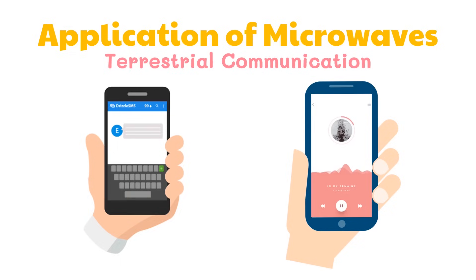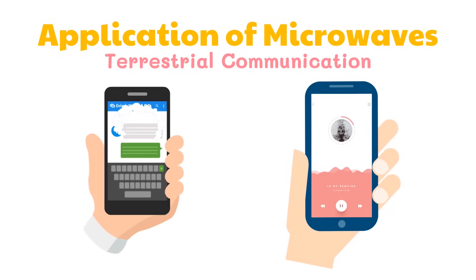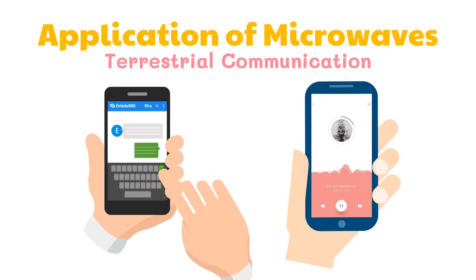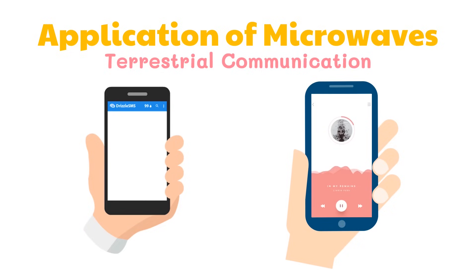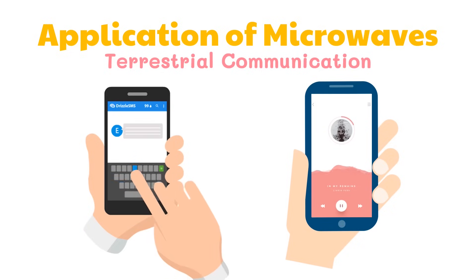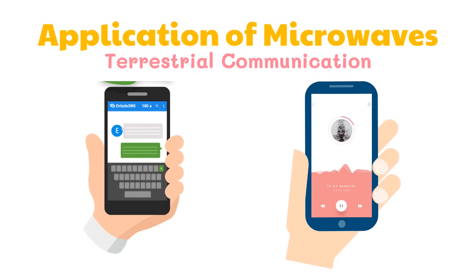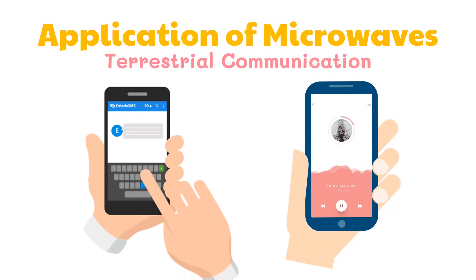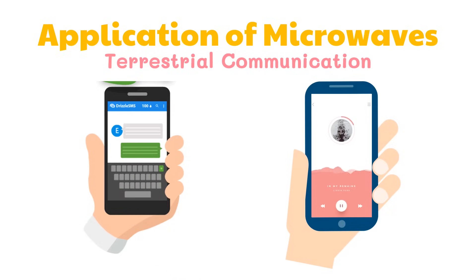A cell phone is a radio transmitter and receiver that uses microwaves. A cellular phone is a very sophisticated radio, and it is today's answer to the emerging demand for mobile communication. Cellular phones depend on an overlapping network of cells — areas of land several kilometers in diameter — and each cell has its tower that receives and sends microwave signals.